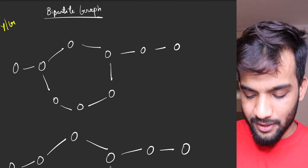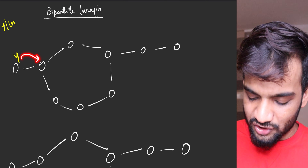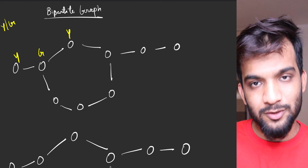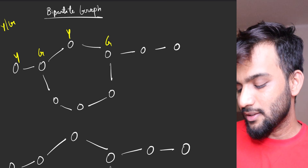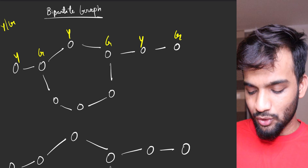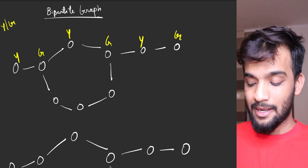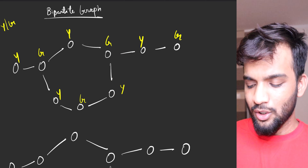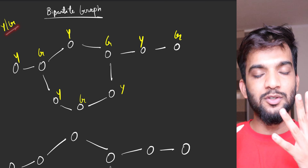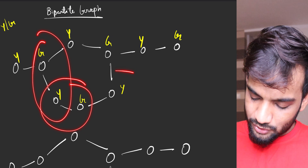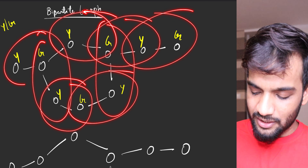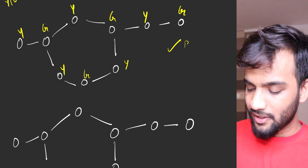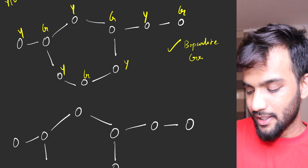If I take this particular graph and try to color it - yellow - obviously the adjacent node we cannot color with yellow because two adjacent nodes would share the same color, so we give it the opposite color green. Then the next one will have yellow, then green, then yellow, then green. None of the adjacent nodes are having the same color. Going the other direction, this will be yellow, this will be green, this will be yellow. So I took two colors and was able to color the entire graph such that every two adjacent nodes have different colors. This graph is a bipartite graph.